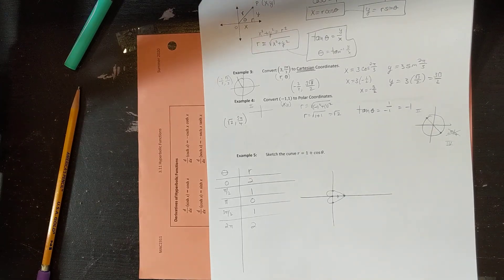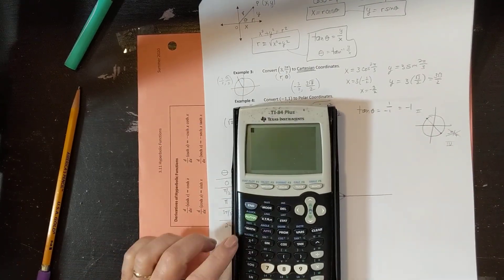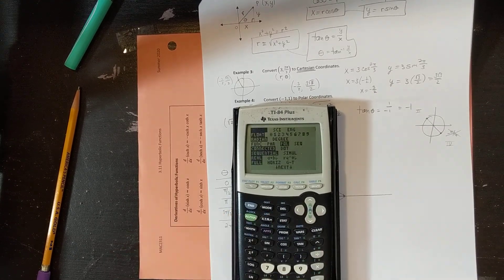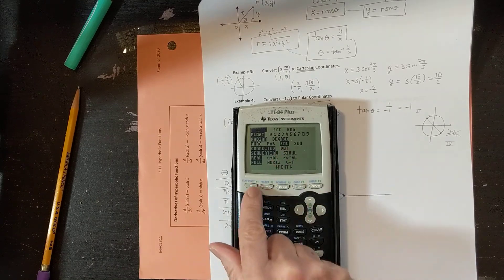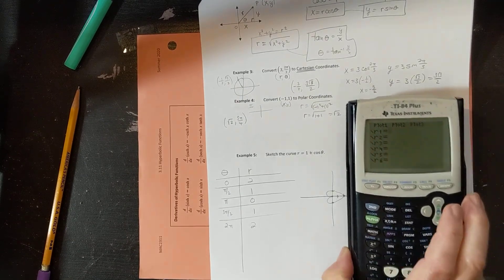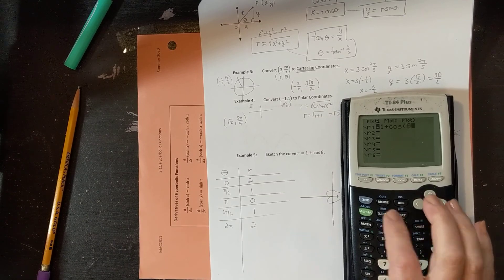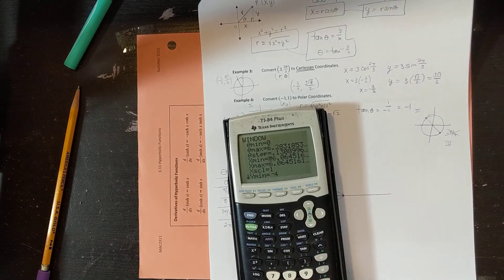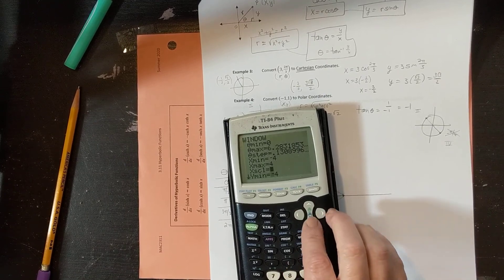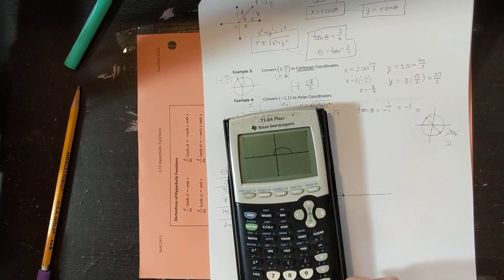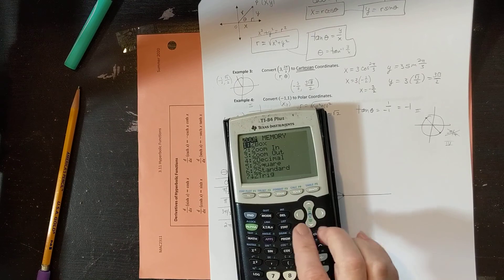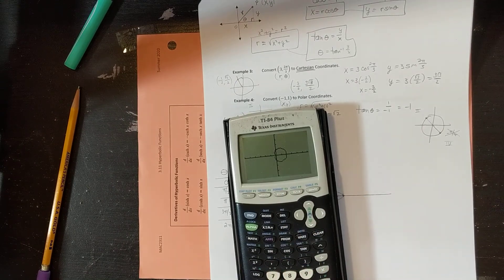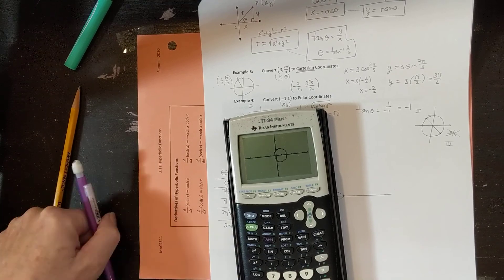Let me show you quickly on the calculator. Make sure you're in polar mode. Go to Y= and enter 1 + cos(theta). In the window, set theta from 0 to 2π, and x and y from −4 to 4. This gives you the cardioid shape. If it looks a bit squished, hit Zoom and select option 5 — Zoom Square — which rounds out circles and cardioid shapes properly. That's the first video for section 10.3.